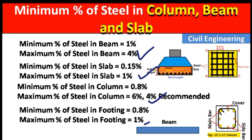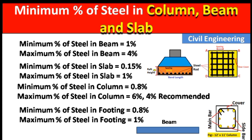So these are the maximum and minimum percentages of steel which should be provided in columns, beams, slabs, and footings. Please like this video and subscribe to my channel for new updates about civil engineering. Thank you.